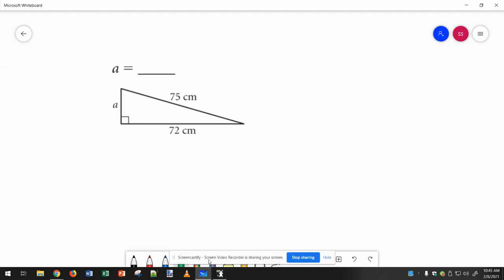So, for this problem, we set up the Pythagorean Theorem. So, a squared, this side would be b, so plus 72 squared, and the hypotenuse is 75 squared.